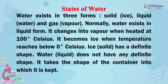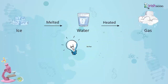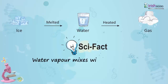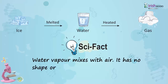Ice, a solid, has a definite shape. Water, a liquid, does not have any definite shape — it takes the shape of the container into which it is kept. Water vapour mixes with air and has no shape or volume.